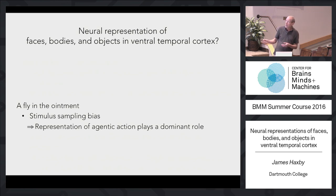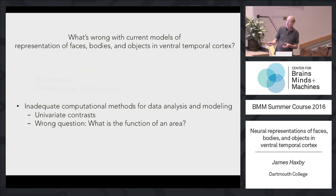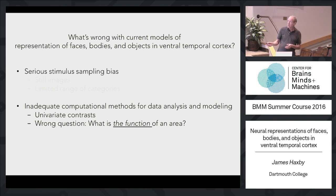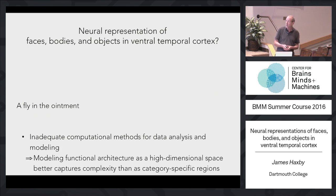The conclusion I'm going to come to is that there's a dominant role being played by the representation of agentic action in ventral temporal cortex. The second problem is inadequate computational methods for data analysis and modeling. These have relied on univariate contrasts — asking whether there's a stronger response to one thing than another — which I think asks the wrong question: what is the function of an area? The issue is whether areas do one thing or have many functions multiplexed together, and whether dividing cortex into category-selective areas is even the right framework.